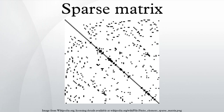The format is good for incrementally constructing a sparse matrix in random order, but poor for iterating over non-zero values in lexicographical order. One typically constructs a matrix in this format and then converts to another more efficient format for processing.